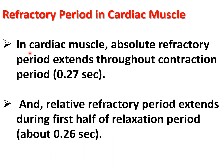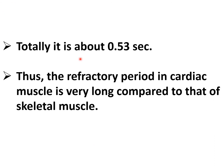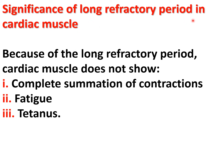Refractory period in cardiac muscle: in cardiac muscle, the absolute refractory period extends throughout the contraction period with a duration of about 0.27 second. The relative refractory period extends during the first half of the relaxation period with a duration of about 0.26 second. Total is about 0.53 second. The refractory period in cardiac muscle is very long compared to that of skeletal muscle. Because of this long refractory period, the cardiac muscle does not show fatigue. Complete summation of contraction and tetanus are also relevant here.